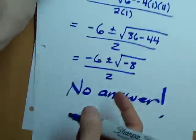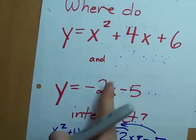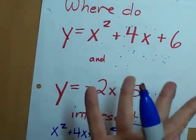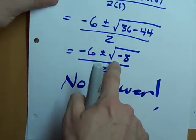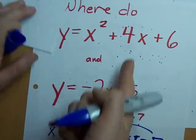That means these two, the parabola and the line, don't intersect at all. No answer, because there's a negative underneath the square root. No solution.